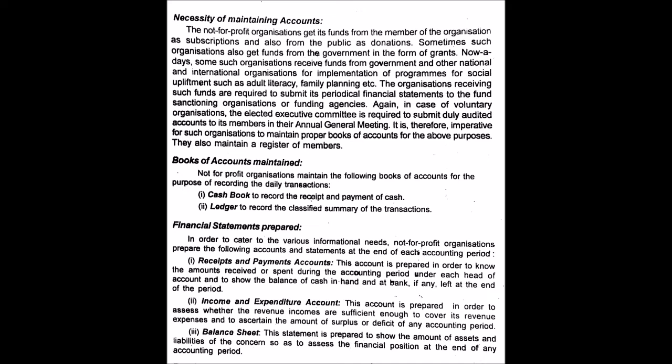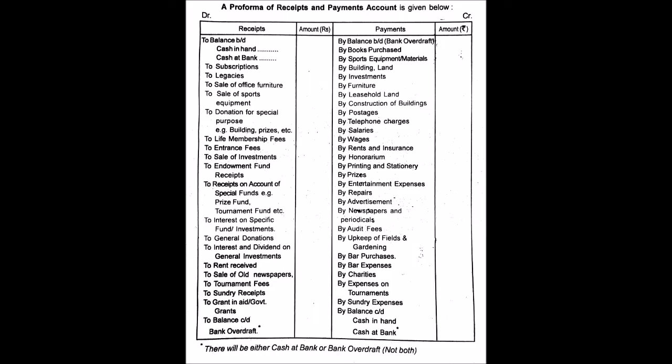The first financial statement is the receipts and payments account. A receipts and payments account is simply a summary of all cash transactions. In a cash book, you put all cash transactions in chronological order as and when they take place. In a receipts and payments account, you summarize all similar transactions of similar categories. It includes an opening balance of cash and bank, and also a closing balance of cash and bank if any.